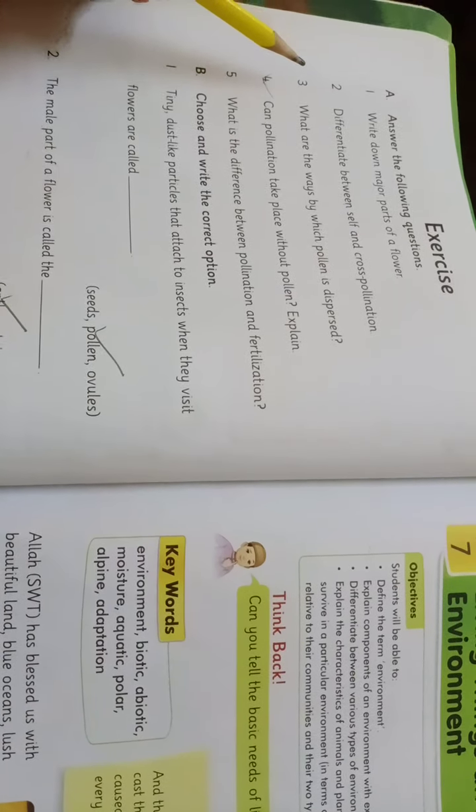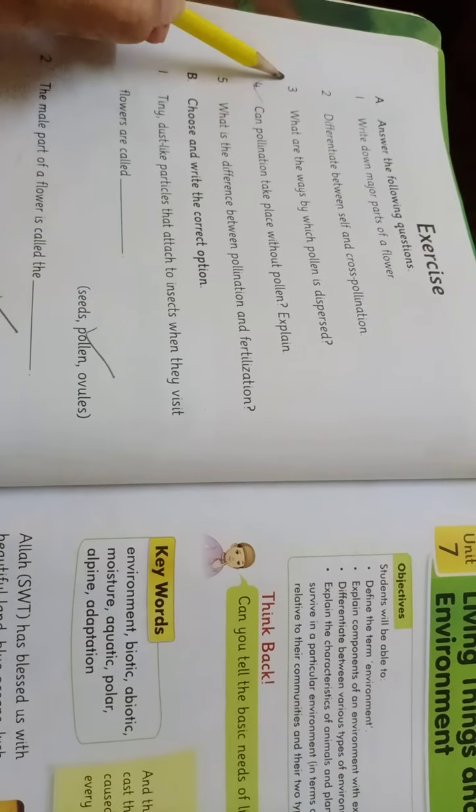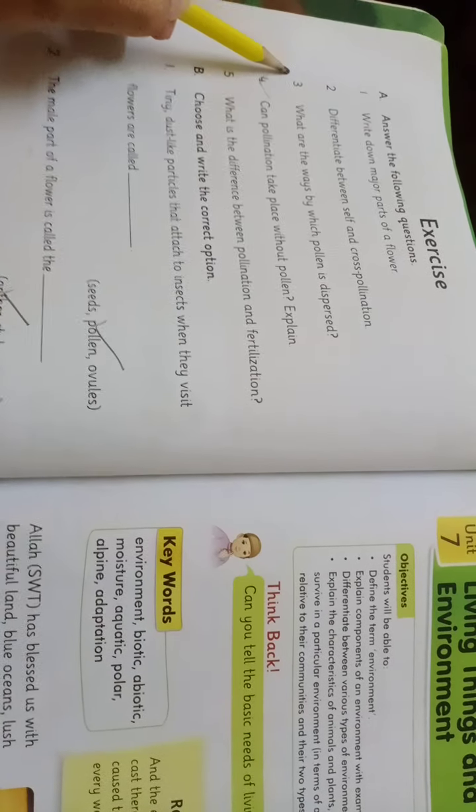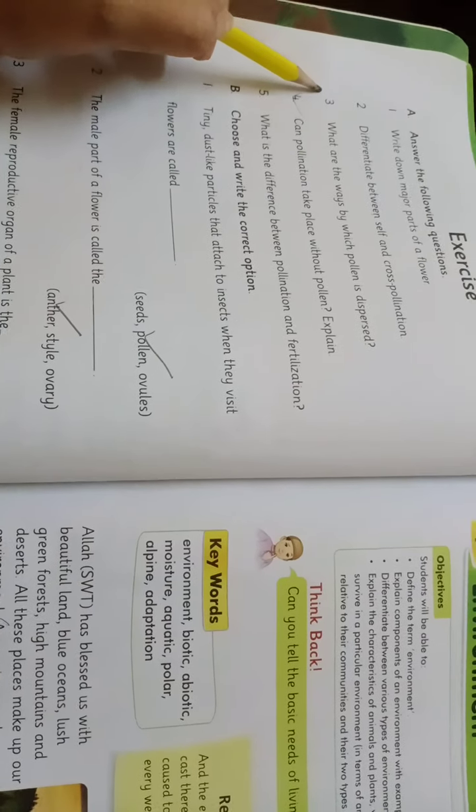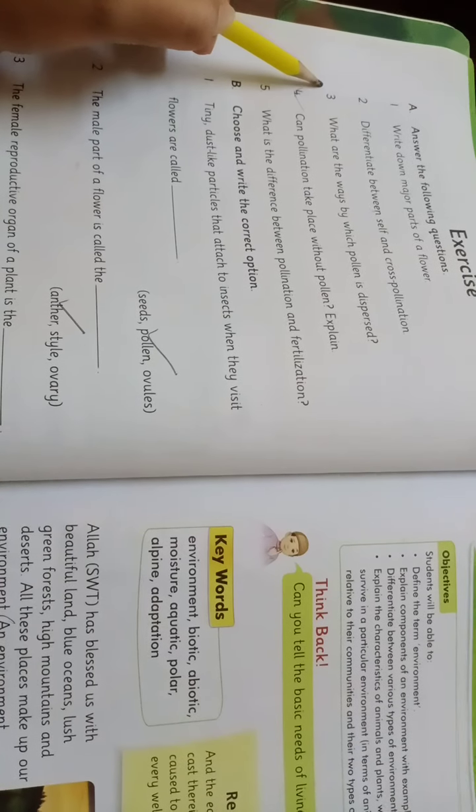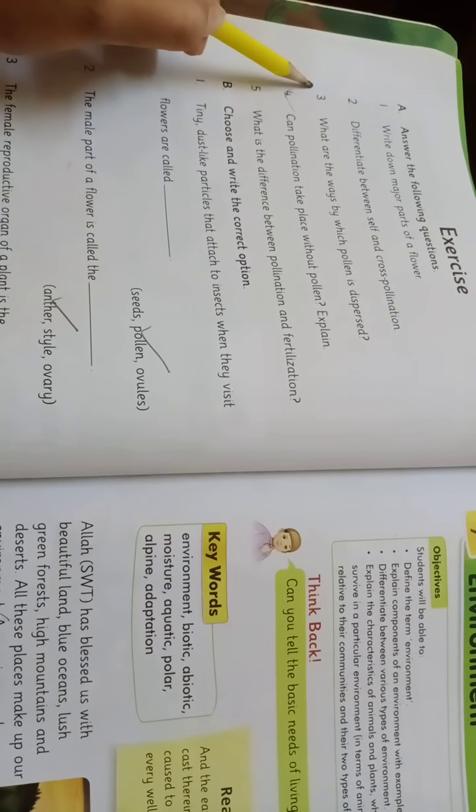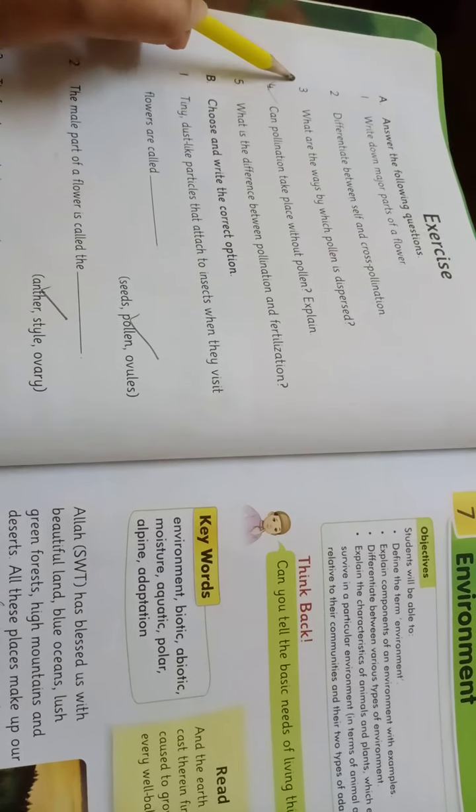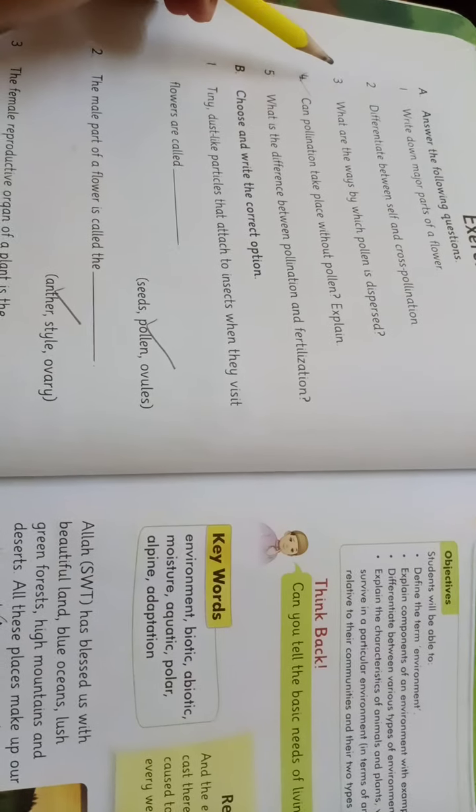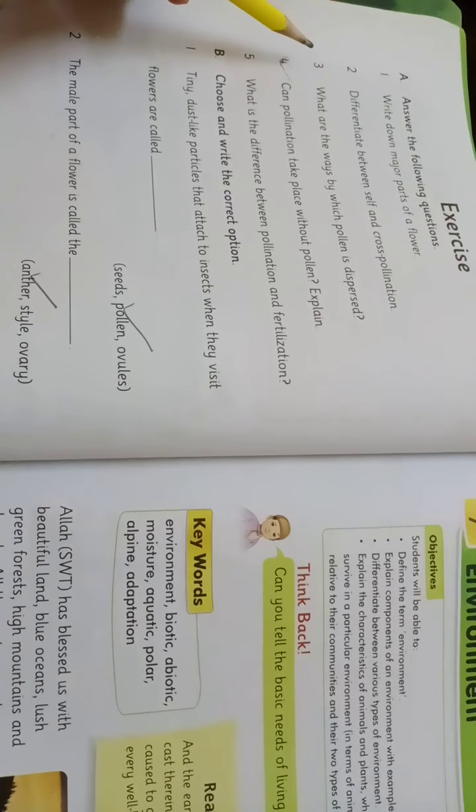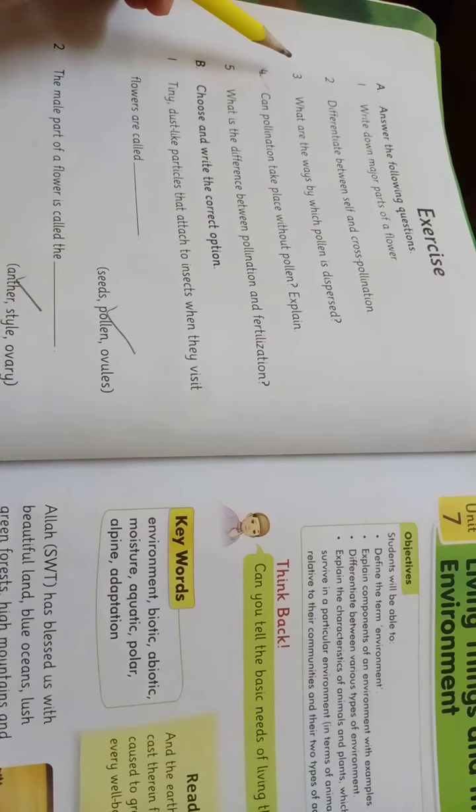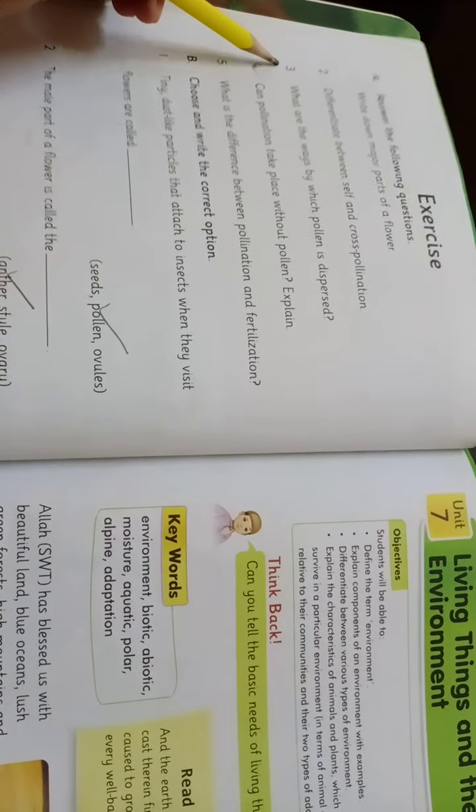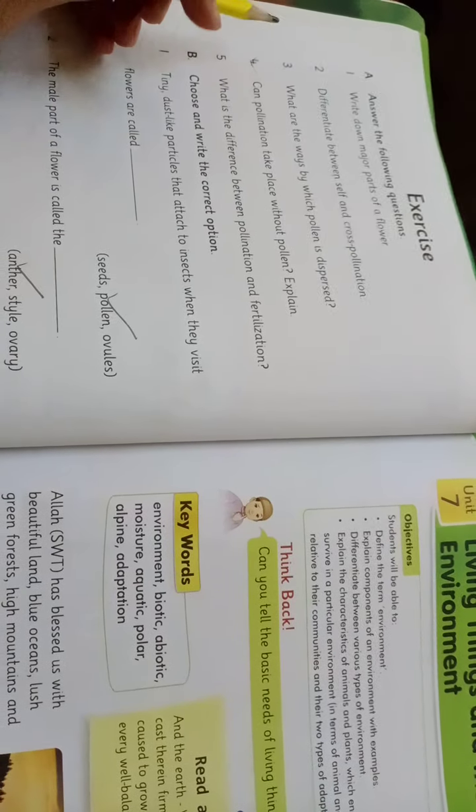So the third question is what are the ways by which pollen is dispersed? So the answer is pollen gets attached to insects when they sit on flowers. When these insects visit any other flower, the attached pollen drops there. This is how insects like bees and butterflies help in pollination. Kya hota hai ke jab ek insect kisi flower pe baithte hain to kya hota hai ke unke upar wo pollens chipak jate hain. Uske baad jab wo udte huwe dusre flower pe jaakar baithte hain to wo pollens jo pehle flower ke the wo dusre flower pe jaakar kya ho jate hain attached ho jate hain.